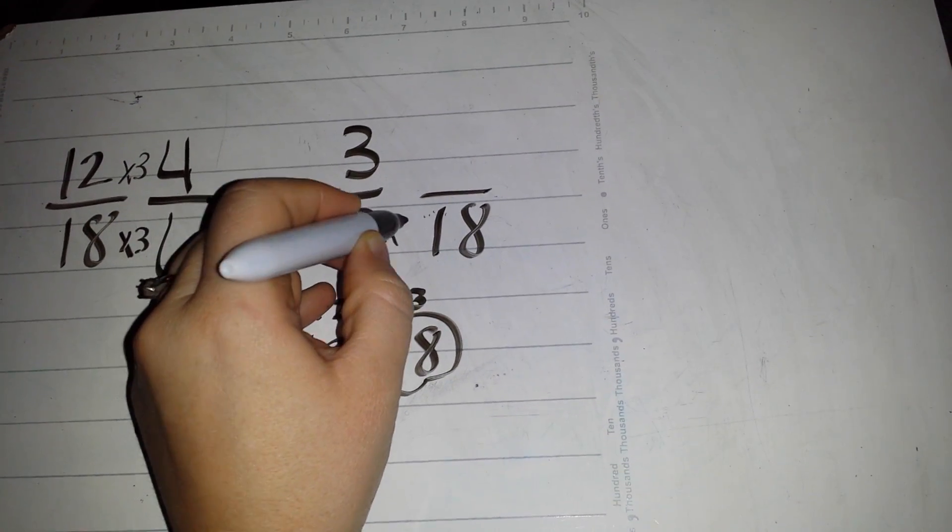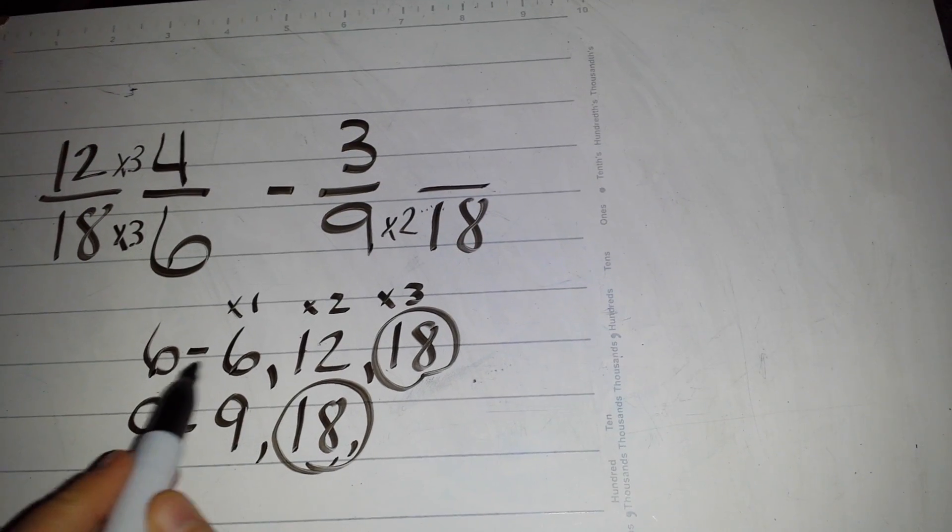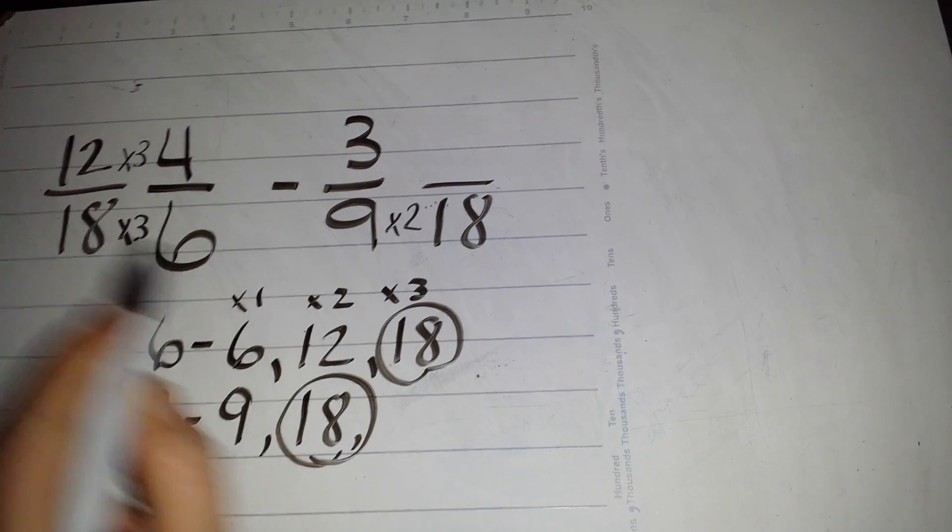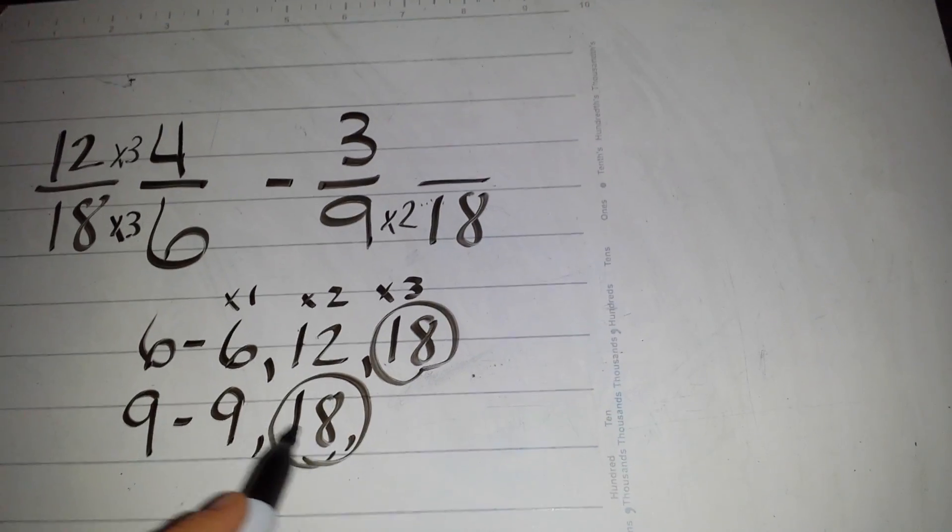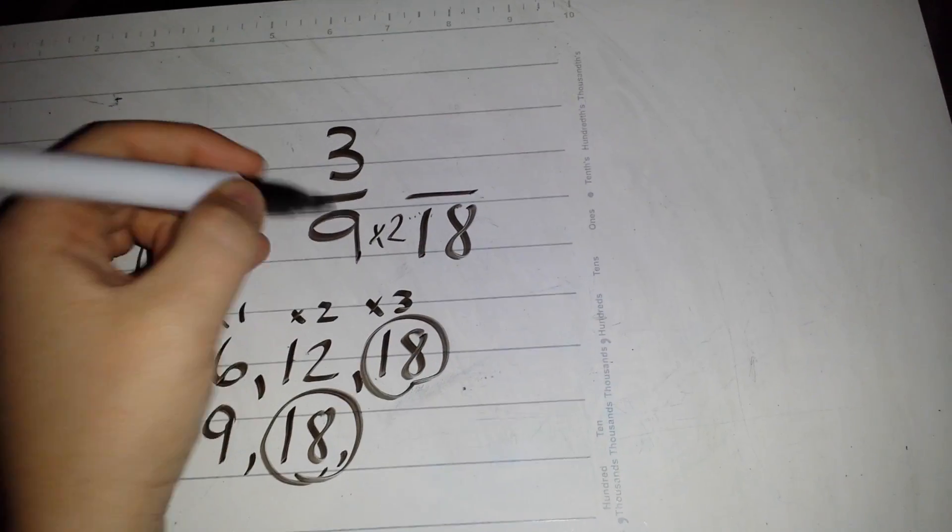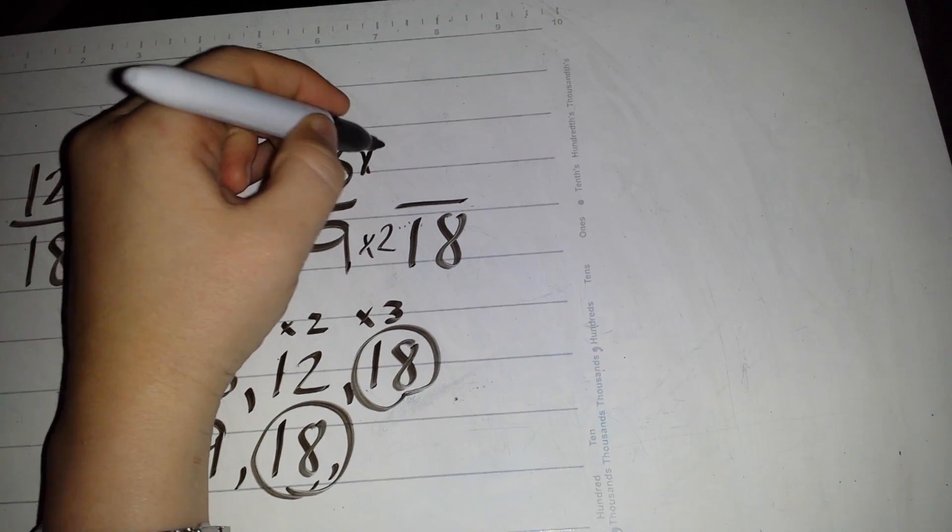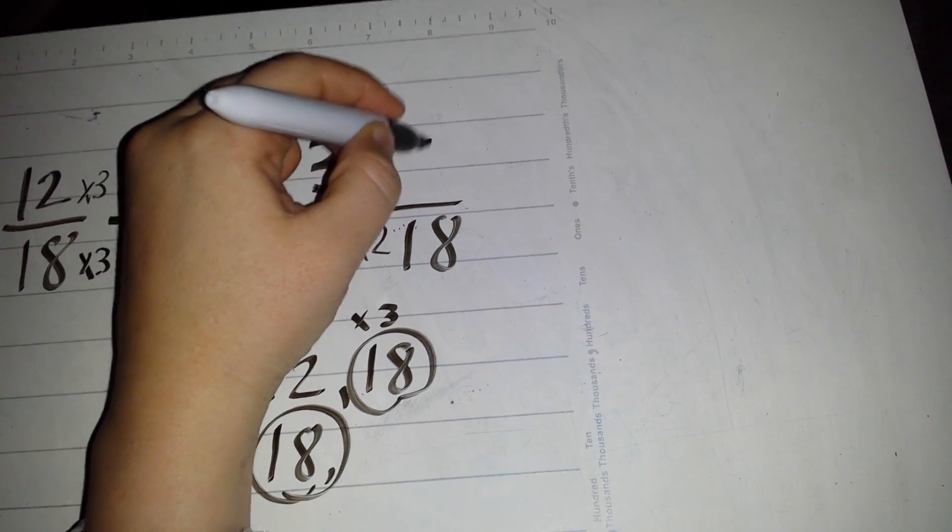Nine times two gives me eighteen, and I can check down here. It took me one, two, three to get to eighteen. It took me one, two to get to eighteen here. What I do to the bottom, I do to the top. Three times two is six.